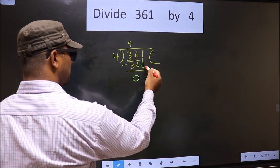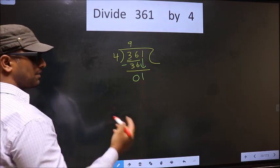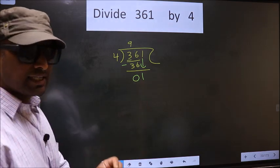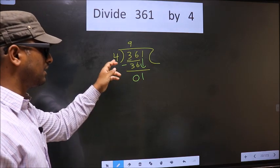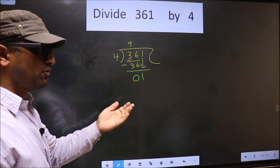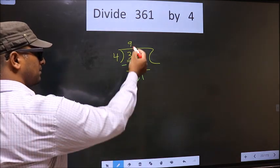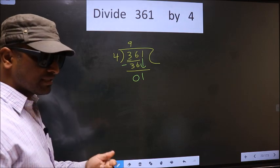Now, we bring down the beside number 1 down. Now, this is where the mistake happens. And the mistake is this one. Here we have 1, here 4. 1 is smaller than 4. So, what many do is, they put a dot and take 0 here. Which is wrong.